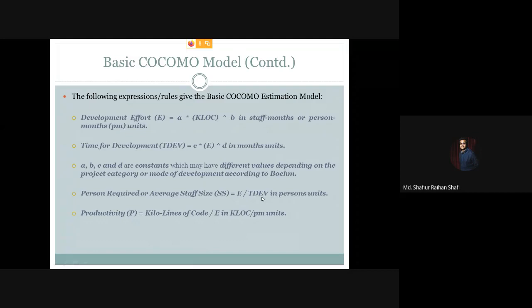If we divide the effort by the time for development, we get the average staff size. And if we divide the amount of kilo lines of code (KLOC) by the effort, we get the software project productivity. The unit of productivity will be KLOC per PM (person month).